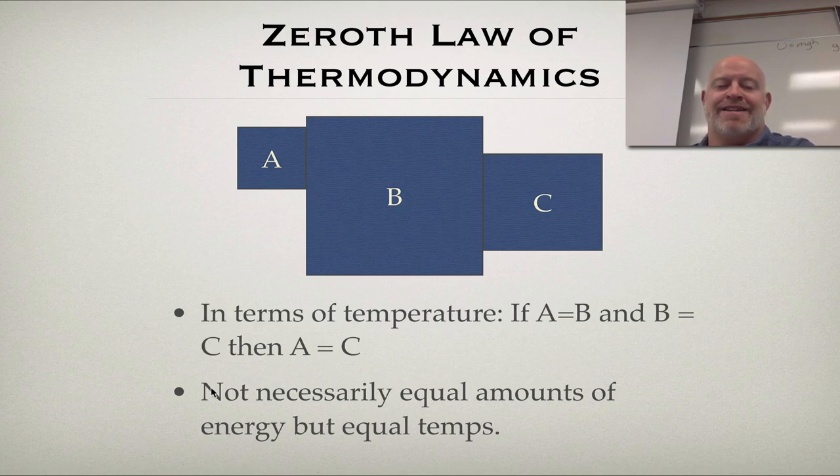Now, keep in mind, this does not mean they have equal amounts of energy, just equal temps. That's kind of the key thing as we look at this because A is much smaller than B. So if you look at their energy or their heat content, A will have less heat content. B would have more heat content at the same temperature. So kind of keep this in mind. We're talking about equilibrium temperatures here.